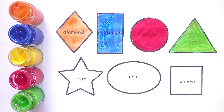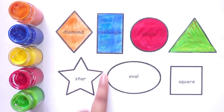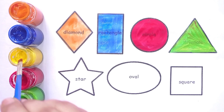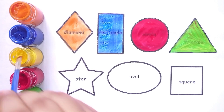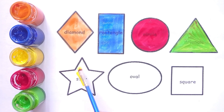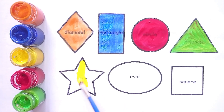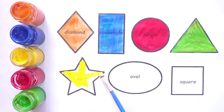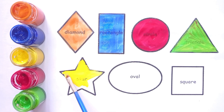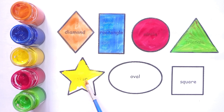This is star shape, star shape. Yellow, yellow color. This is star shape.